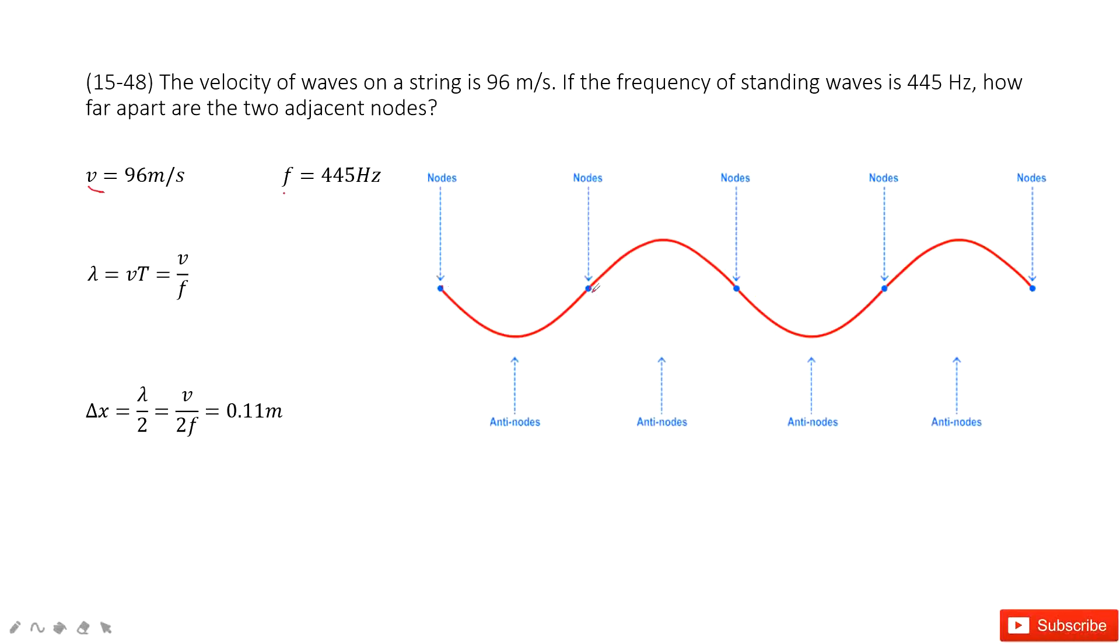Now you can see two continued nodes, these two continued nodes. Adjacent nodes is just half of the wavelength. Do you agree?